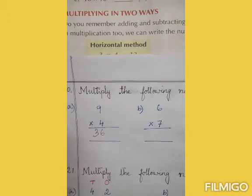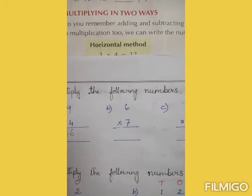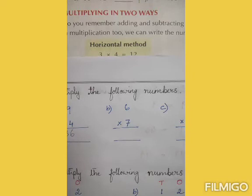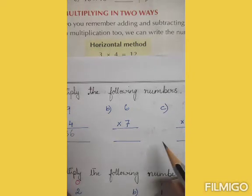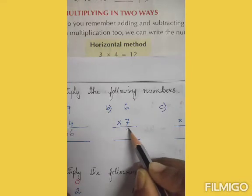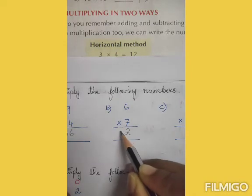Next is number B: 6 into 7. 6 into 7 is 42. So we will write here 42.